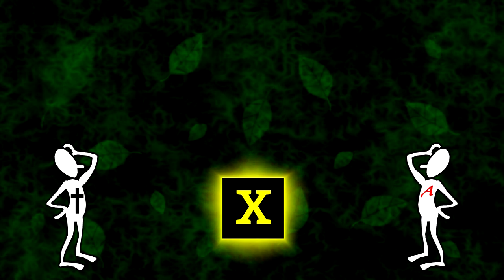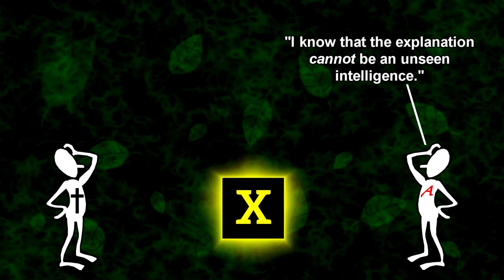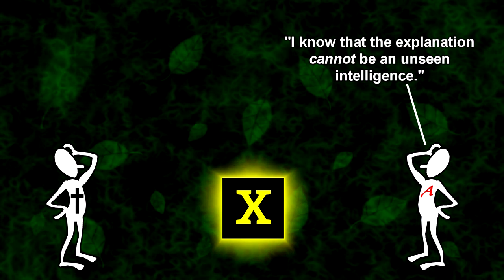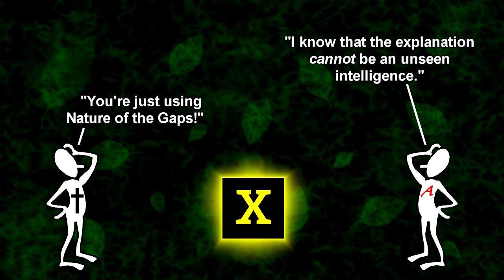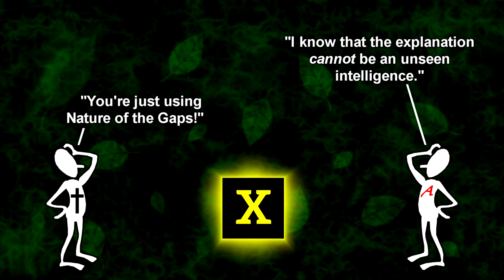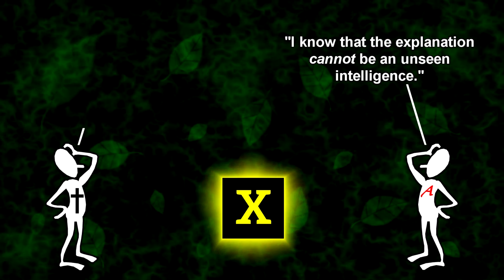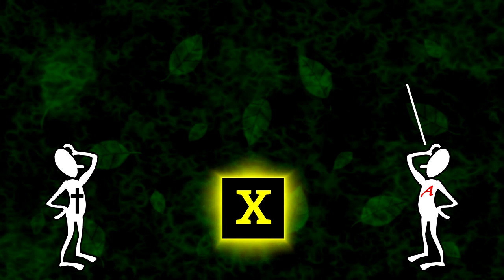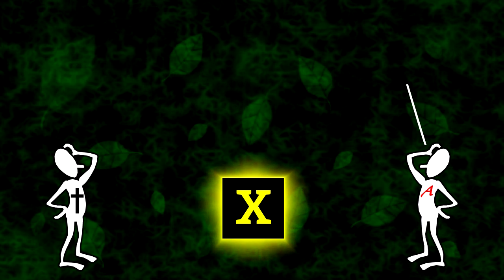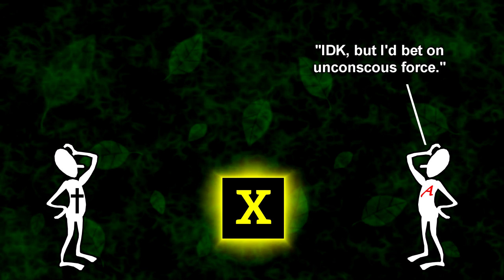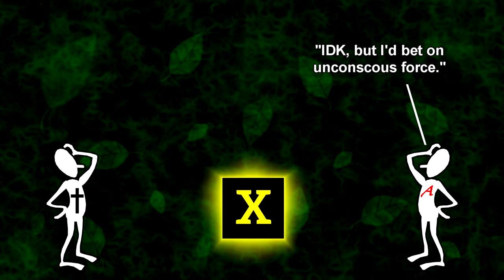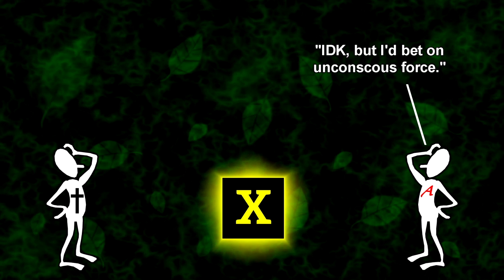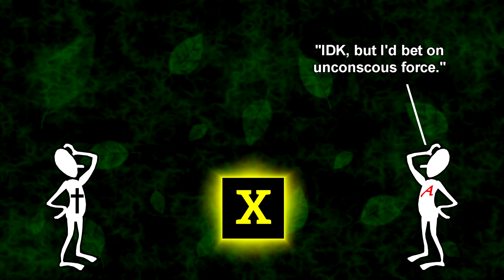So, if an atheist says, I know that the explanation cannot be an unseen intelligence, then I think it's fair to accuse them of using nature of the gaps, or more accurately, unconscious force of the gaps. But, if they, like me, say that they don't know what the explanation is, but their money's on an unknown, unconscious force rather than an unseen intelligence, that seems like a reasonable position to take.